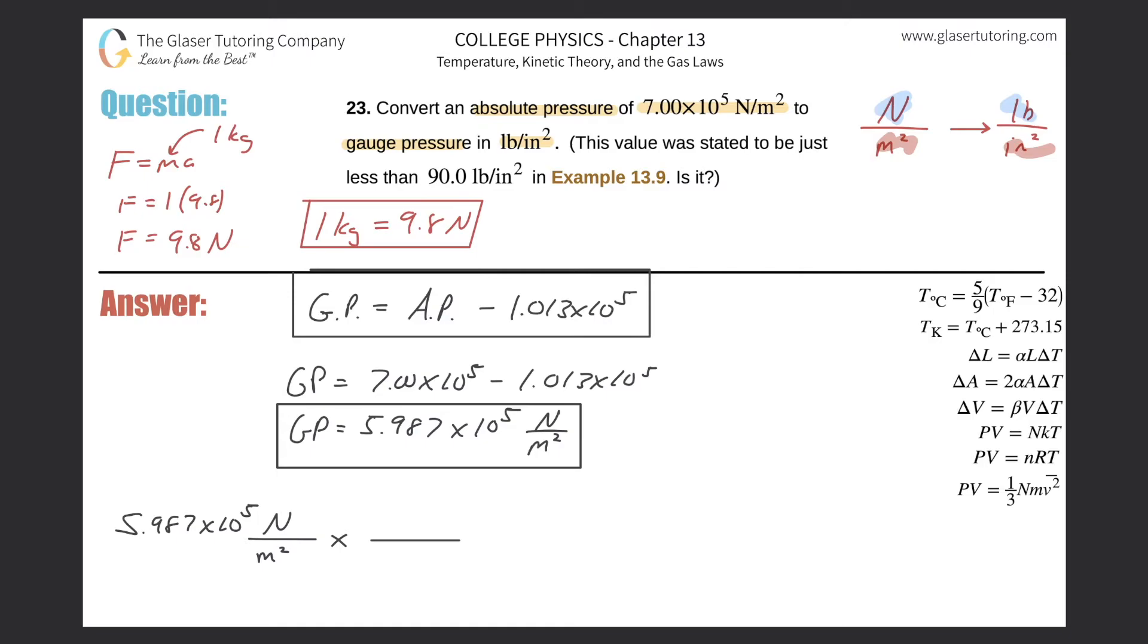So this is the first step. I'm going to plug in my newton value in the denominator because I want them to cancel, and then kilogram in the numerator. And now I know the relationship that there's 9.8 newtons for every one kilogram. See you later, Newton.